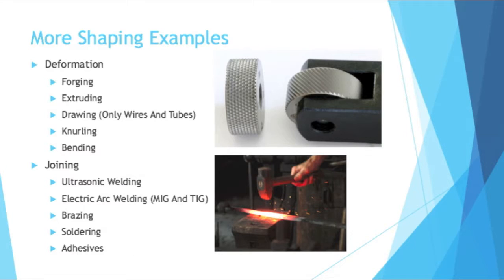Moving on to more shaping examples — there's deformation. Forging is when you hit something with a very heavy object. Extruding is where you push something through a die to change its shape. Drawing is a lot like extruding, but drawing is specifically only for wires and tubes.